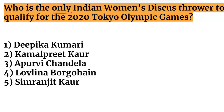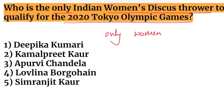Next question: who is the only Indian women's discus thrower to qualify for the 2020 Tokyo Olympic Games? Questions about the 'first' or 'only' person in a particular field are important and frequently asked. The only Indian women's discus thrower to qualify for the 2020 Tokyo Olympics is Kamalpreet Kaur.